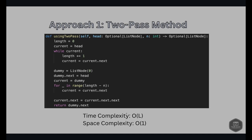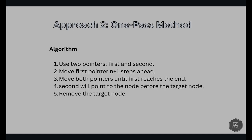The one-pass approach uses two pointers: first and second. We advance first by n+1 steps, then move both pointers simultaneously until first reaches the end. At that point, second is pointing to the node just before the target node, so we remove the target by doing node.next = node.next.next.